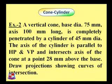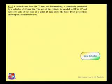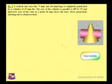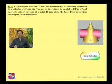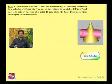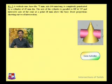The height of the cylinder is not given, so we can take any convenient height. The cone is resting on its circular base and is penetrated by a horizontal cylinder, and we have to draw the curve of intersection. First we draw the front view and top view of the cone. The cylinder would appear as a circle in its side view, so the third view — the side view — will be needed to solve this problem.